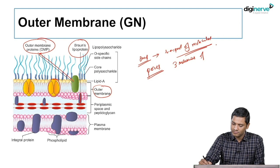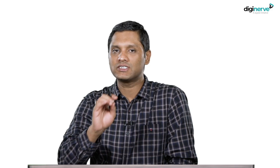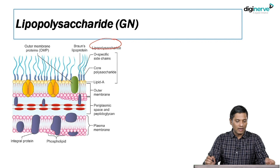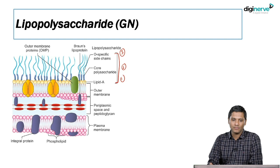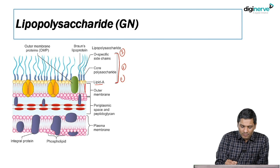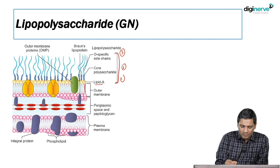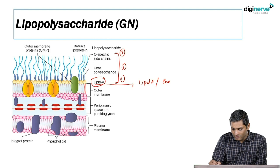Next to the outer membrane is a structure present in gram-negative cell wall that is typically absent in gram-positive — the lipopolysaccharide. Lipopolysaccharide has three components: lipid A, core polysaccharide, and O-specific side chains. Lipid A is the first layer of lipopolysaccharide, present adjacent to and connected to the outer membrane. Lipid A is the bacterial endotoxin.